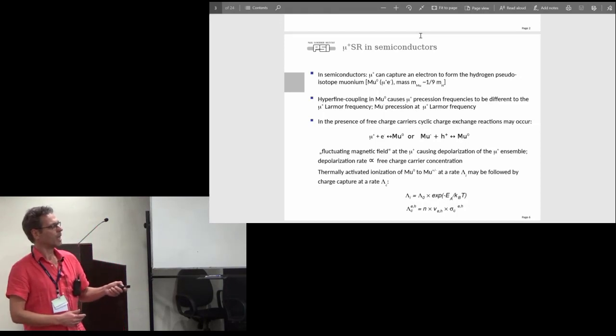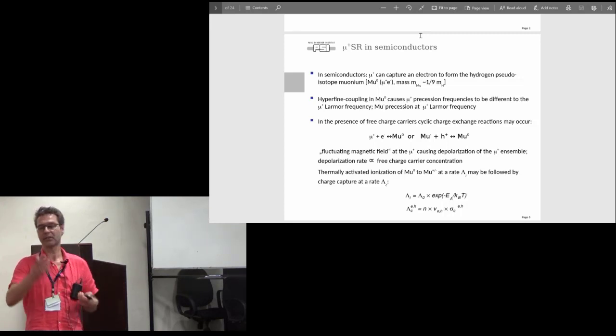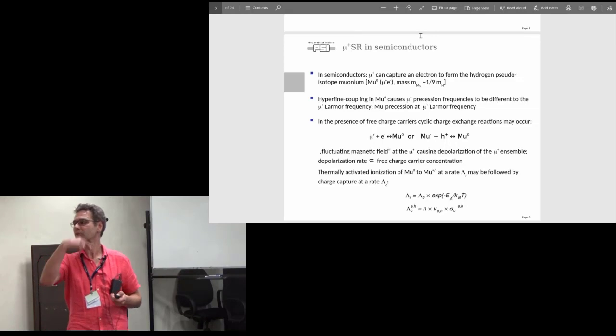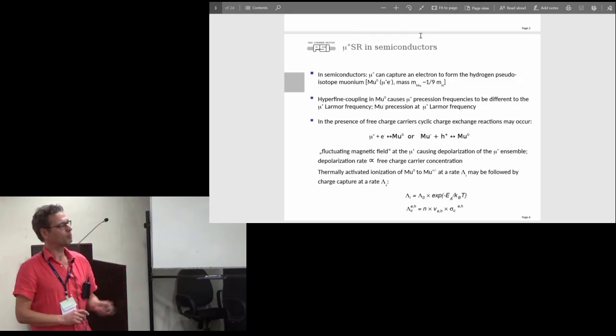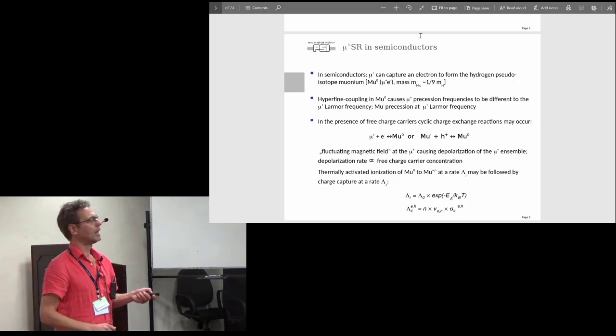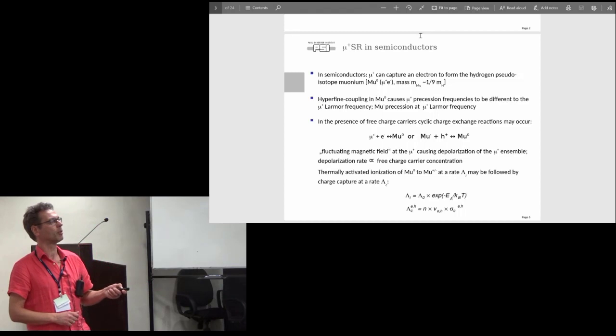In the presence of free charge carriers, you may form the neutral muonium state, but eventually it sits somewhere in the band gap of your system. If you increase the temperature, at some point the electron is ionized and goes into the conduction band. But if there are free electrons around, the system changes back to the neutral state. You will have charge cycles which will cause a fluctuating magnetic field at the muon site because you turn on and off hyperfine fields, and this will cause some measurable depolarization of your muon ensemble.